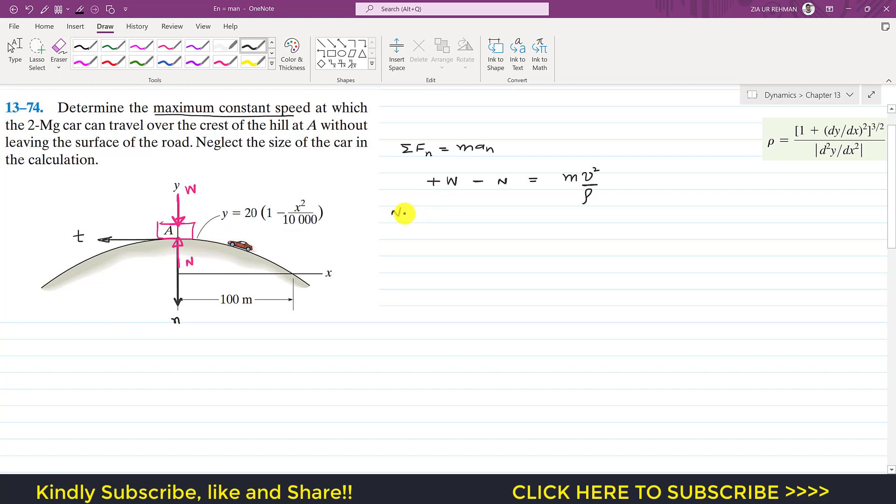We will assume that to find that maximum velocity, N will be equal to 0. So in this equation N is equal to 0, we can write that this weight is equal to M V squared divided by rho, and the weight is Mg, we can write that this is Mg.